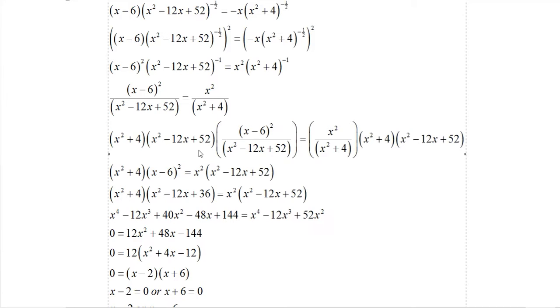Then we get x squared plus four times x minus six squared. By the way, x minus six squared is x squared minus 12x plus 52 again. I'm just showing that I'm multiplying both sides by the same thing. Then what we get is x minus six squared times x squared plus four, and here we get x squared times this. So we multiply this out.